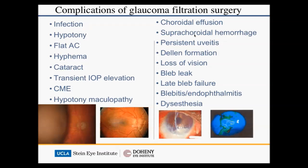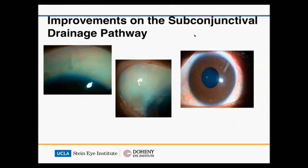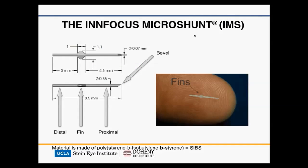The last trial I want to talk about is surgical — the InnFocus micro shunt. These are some of the reasons why we're looking for alternatives to traditional filtering surgery such as trabeculectomy and tube shunt, which led to the MIGS era. We at Doheny were one of the first centers to evaluate and publish on devices like the trabecular micro-bypass, but we're also looking at other ways to lower IOP, particularly the subconjunctival pathway — your typical trabeculectomy or tube shunt pathway — and how that can be improved. That's where the InnFocus micro shunt comes in.